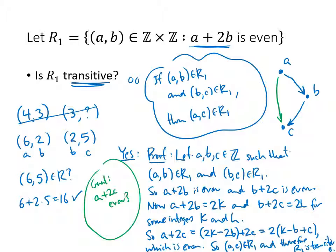That means that (a, c) is in my relation R1, and therefore R1 is transitive. That's how that would go. You kind of investigate, play around with the numbers. If you think it's true, then you go through a proof.